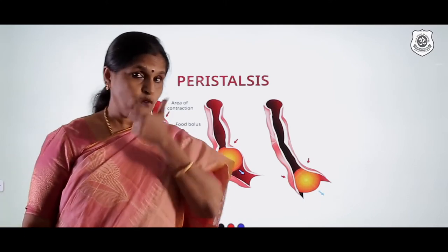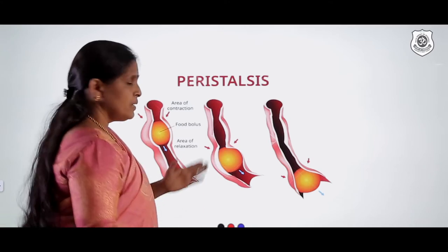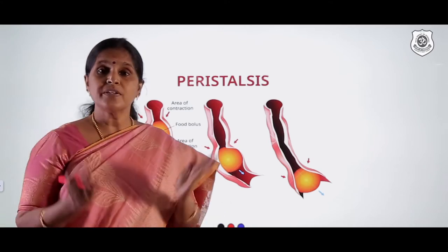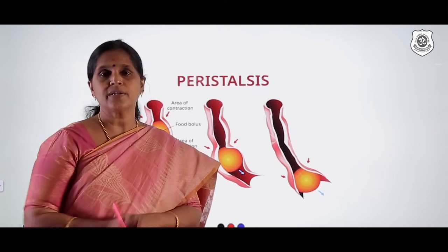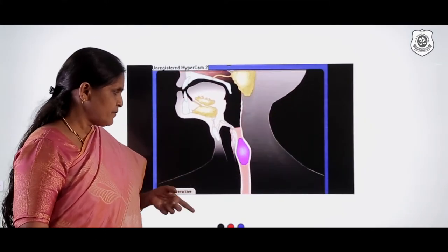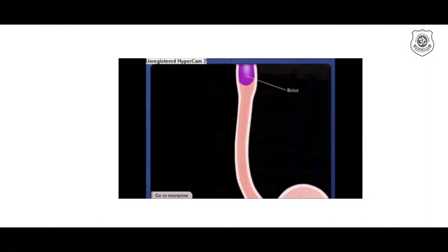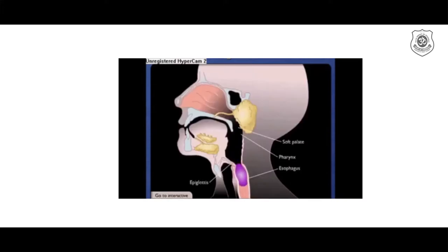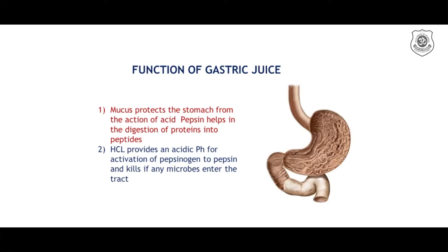In the esophagus, a peristaltic movement is found. Peristalsis is a wave of contraction and relaxation — the food is pushed down through this tubular structure. The food forms a small bolus, which is lubricated with mucus and pushed down towards the stomach by this muscular movement.